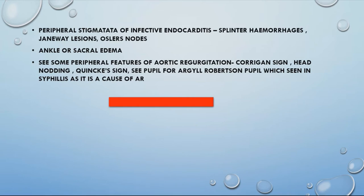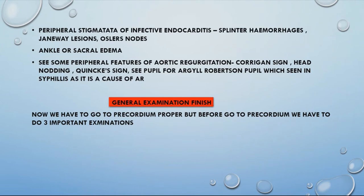We also check the pupils for Argyll Robertson pupils, which are seen in syphilis — syphilis being a cause of aortic regurgitation. This concludes the general examination. Before going to the precordium, we consider three very important additional examinations.